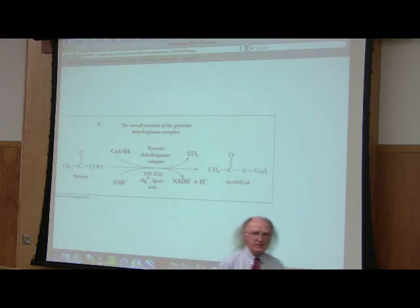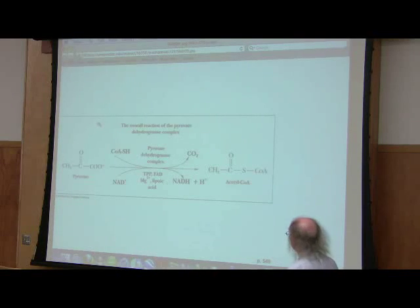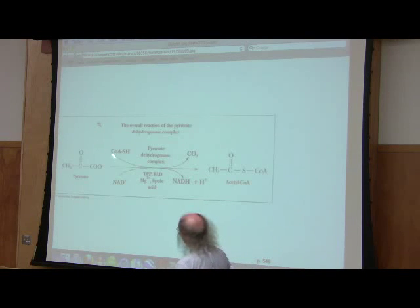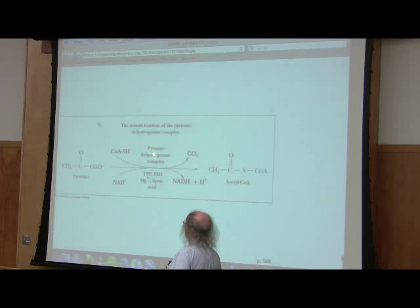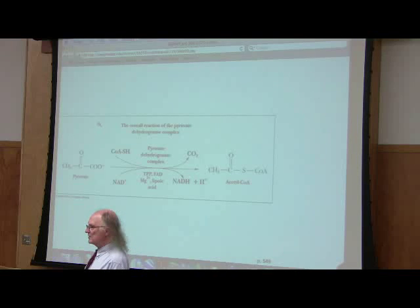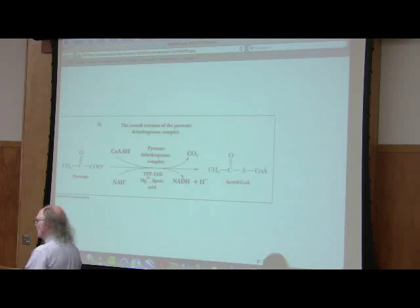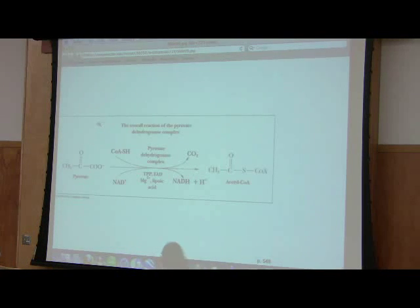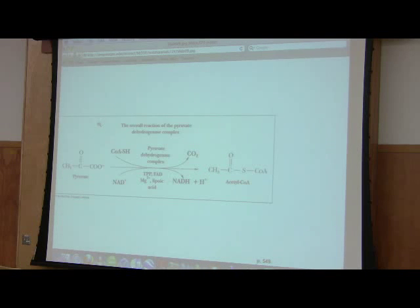That's what happens in the first reaction of the citric acid cycle. This reaction is catalyzed by an enzyme called pyruvate dehydrogenase complex. That's a little different from what we saw last time — pyruvate decarboxylase.